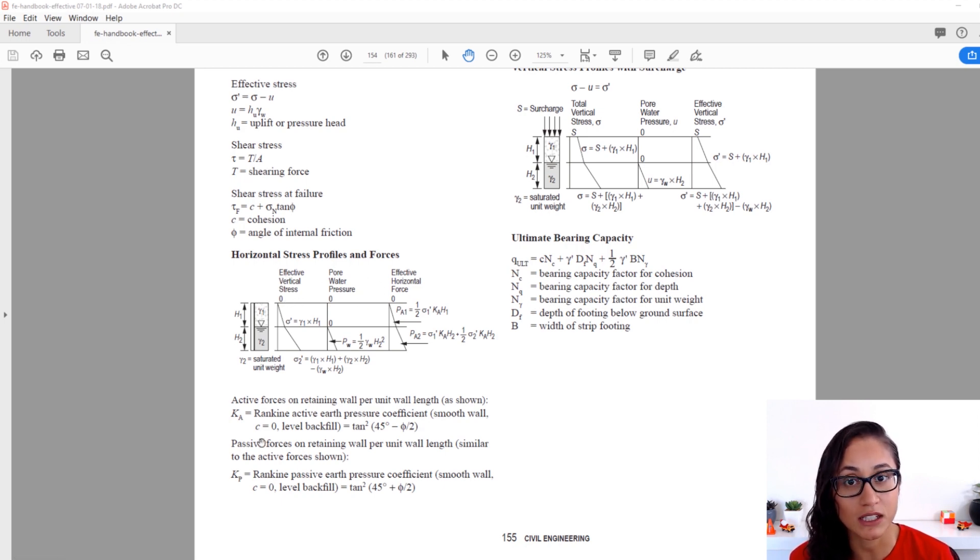Now we only use the Rankine earth pressure for the effective vertical stress. We don't multiply it for the pore water pressure.